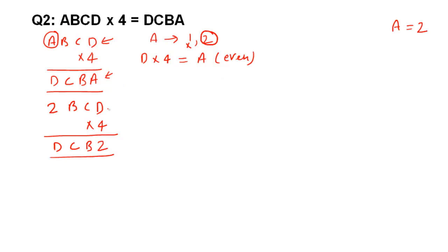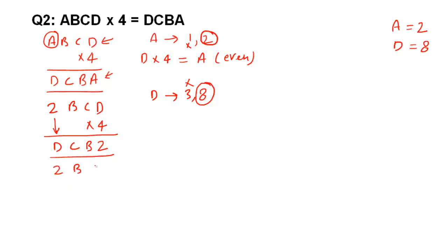Now, 4 multiplied by D gives 2 here, and 4 multiplied by 2 gives D. So D can be 3 or 8, because 4 times 3 is 12 and 4 times 8 is 32. But look: 4 multiplied by 2 gives 8 here — it cannot give 3. So D must be 8. D equals 8 is confirmed. Replacing D, we rewrite as 2 B C 8 multiplied by 4 equals 8 C B 2. Rewriting helps simplify the calculation.